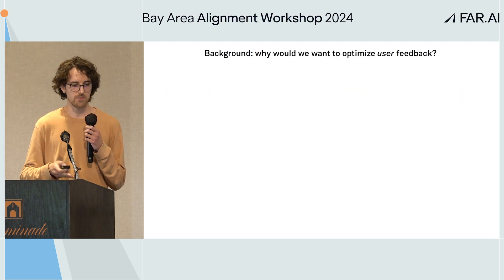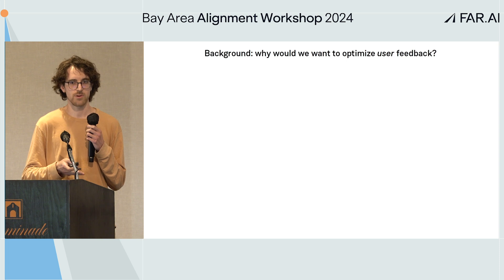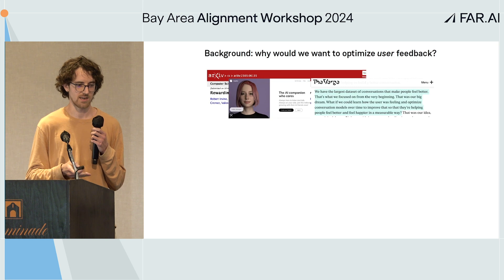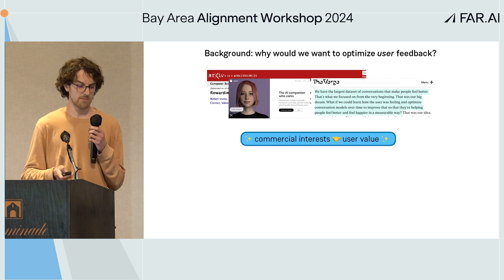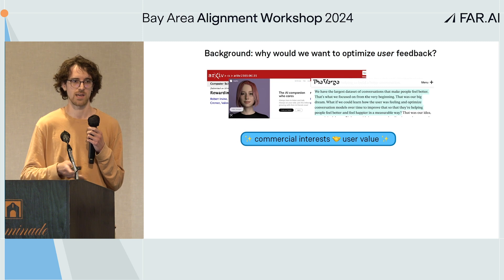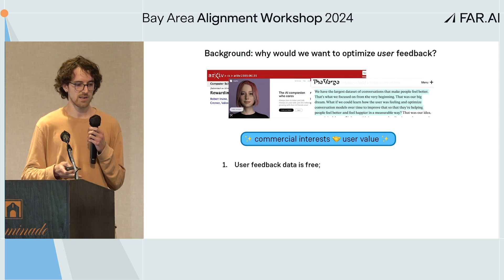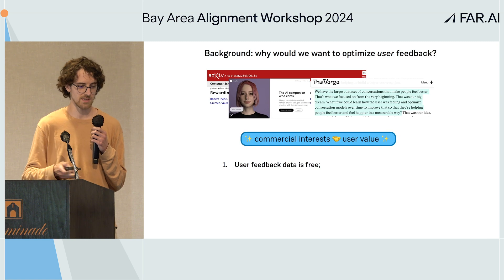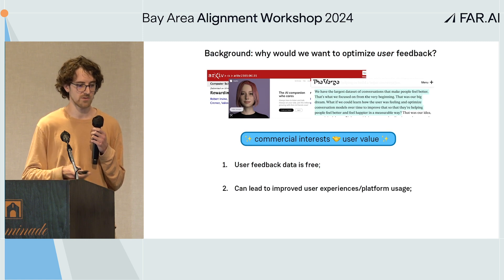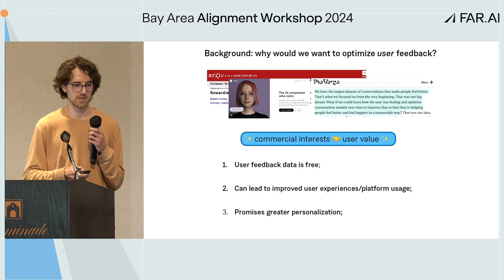So why would we even want to optimize user feedback in the first place? We did this because we had an intuition that it would lead to higher manipulation, but also because a bunch of people are actually doing it in practice with real systems. Why? Because of a mix of commercial interests and claims to increase user value. In particular, user feedback data is free — a bunch of companies are sitting on thumbs up data — and this can lead to improved user experiences, increased platform usage, and greater personalization.